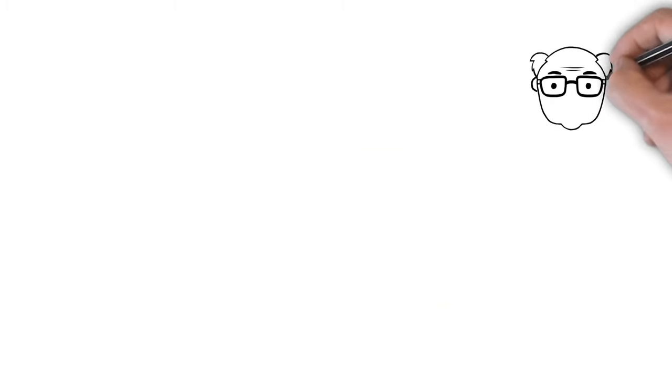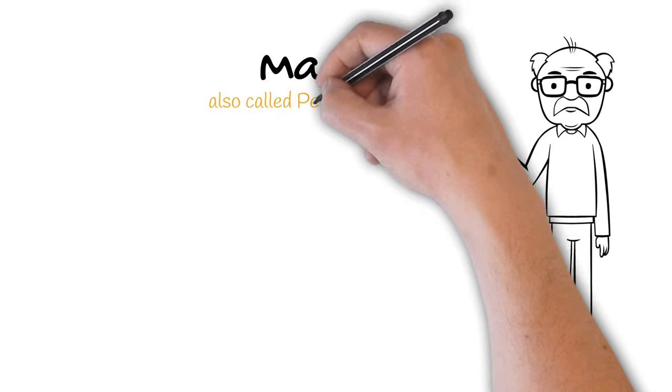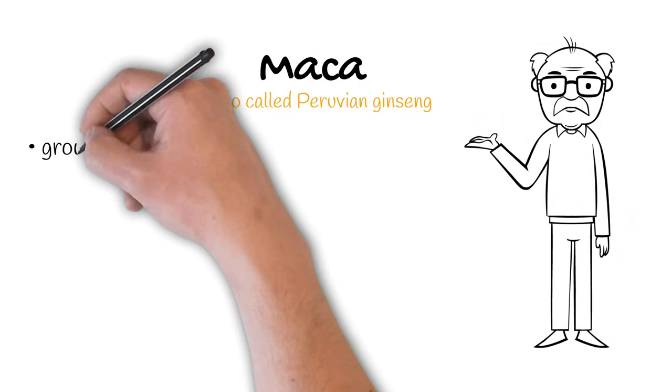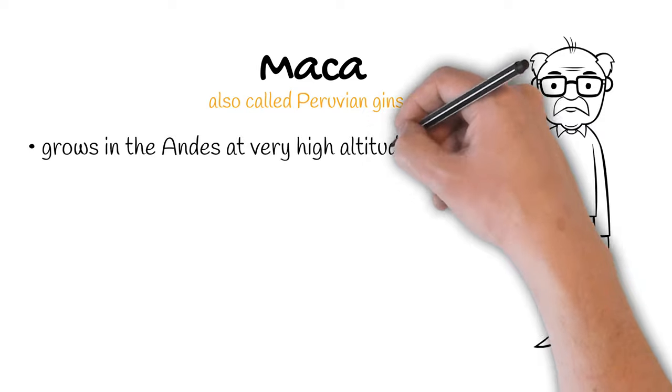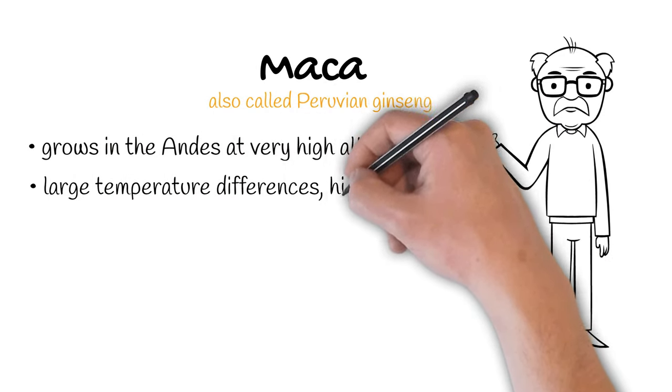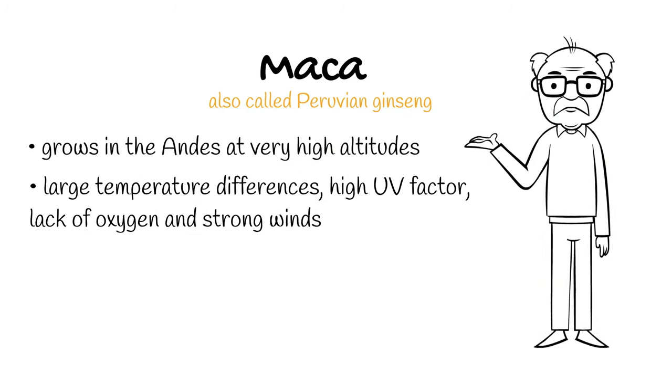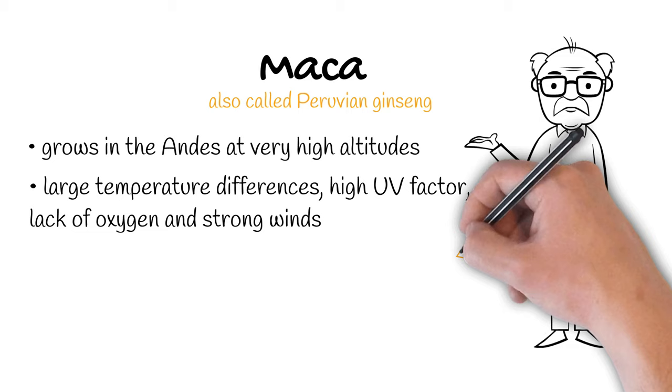What exactly is Maca? Maca plant, also called Peruvian ginseng, mainly grows in the Andes at very high altitudes, about 4,000 meters. It had to adapt to large temperature differences, high UV factor, lack of oxygen, and even strong winds. In this cruel environment it managed to win the battle for survival.